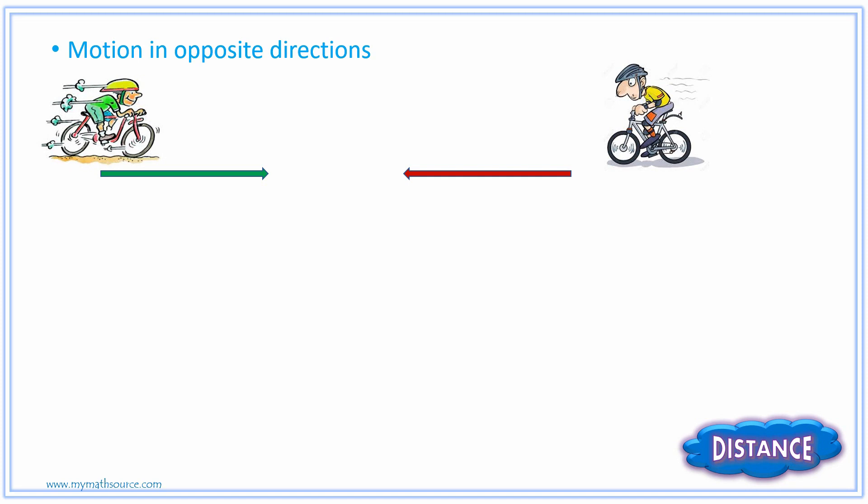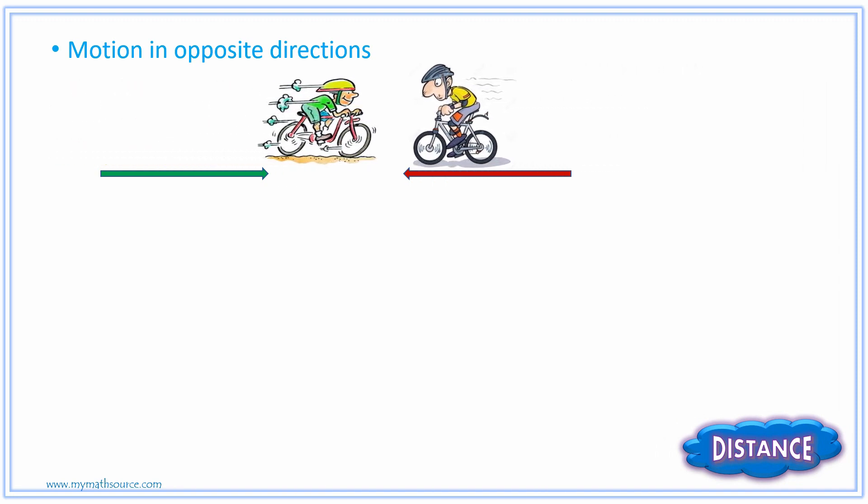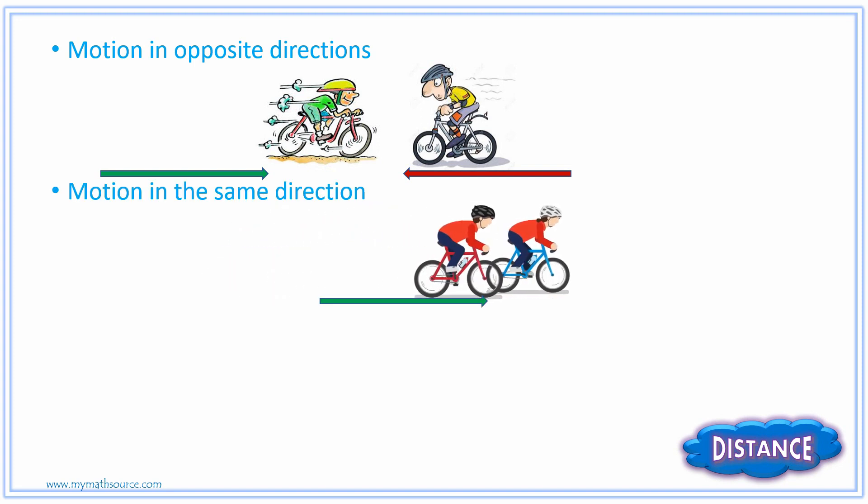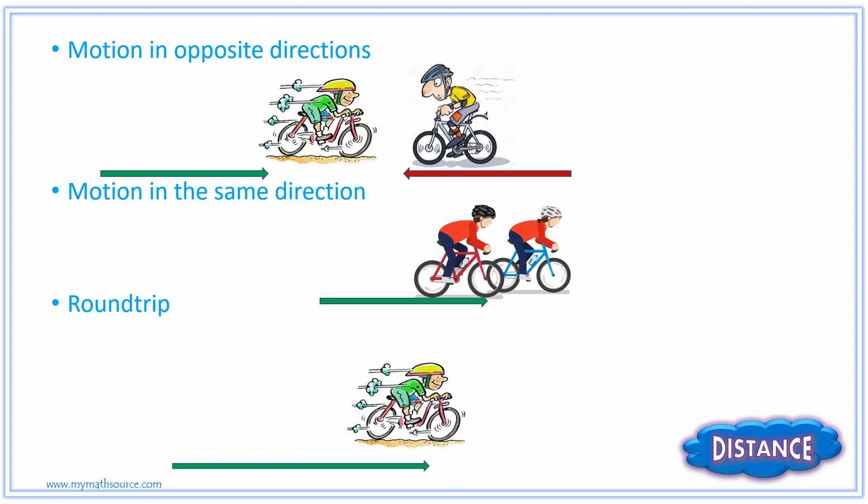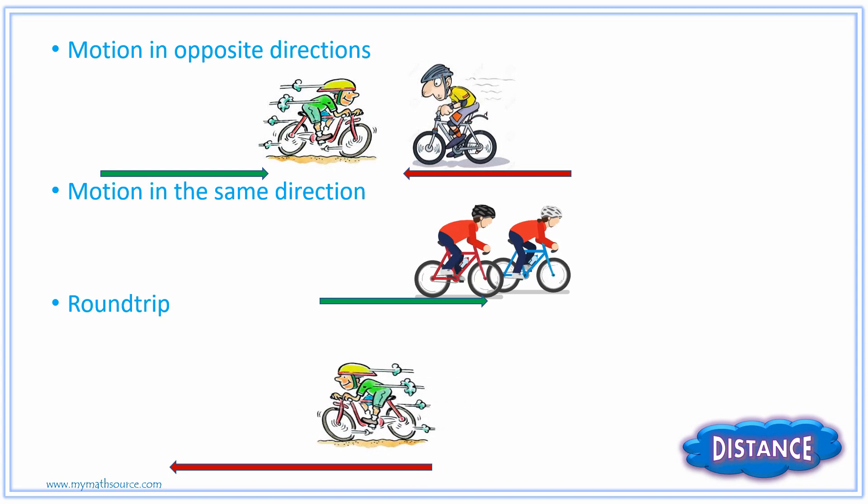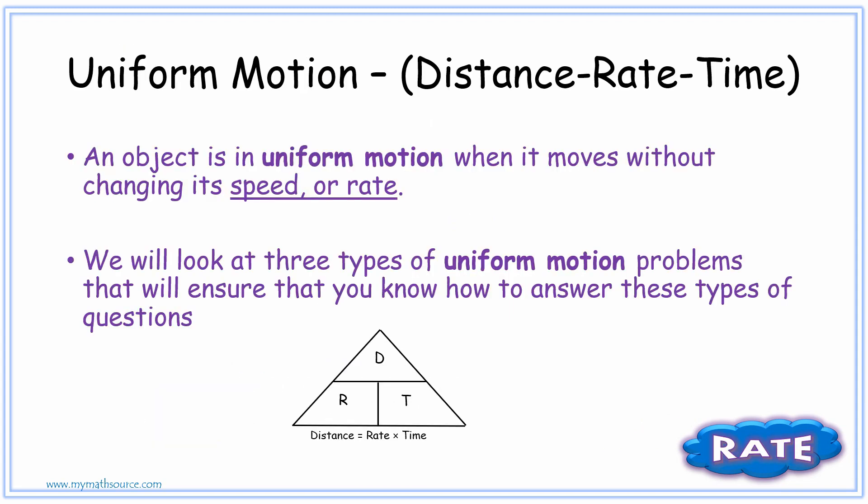For the first graphic, remember motions in opposite directions could mean that two cyclists are coming towards each other from opposite directions. They can also be heading in the same direction, and the video that we did first was a round trip distance where the cyclist can ride, turn around, and then come back to the original destination. In this one, remember uniform rate is when an object moves without changing its speed or rate, and we're going to use the distance rate time formula to assist us in these problems.